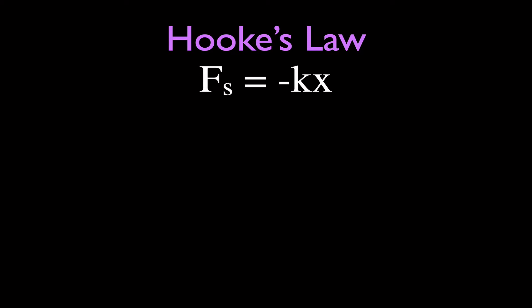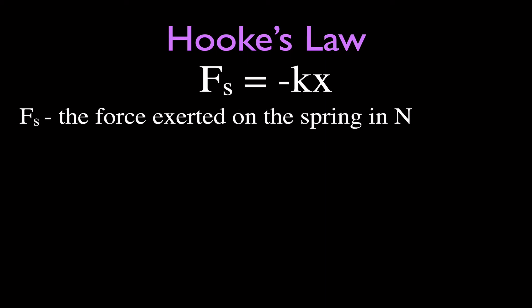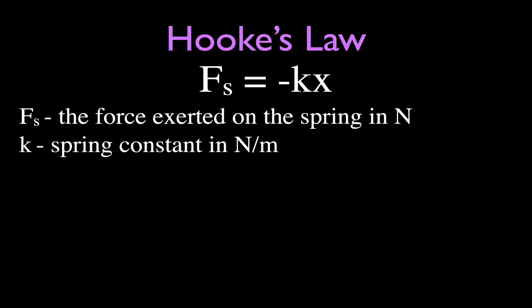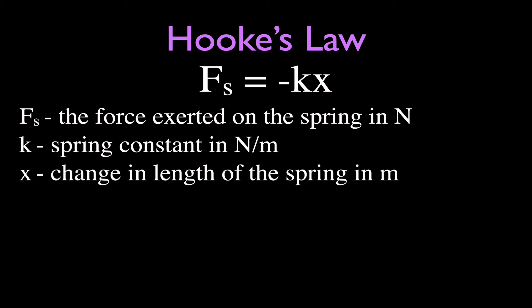For part one, we review Hooke's Law. Hooke's Law says that Fs equals minus k times x. Fs is the force exerted on the spring, measured in newtons (N). k is the spring constant, measured in newtons per meter. And x is the change in length — whether compression or extension of the spring — measured in meters.